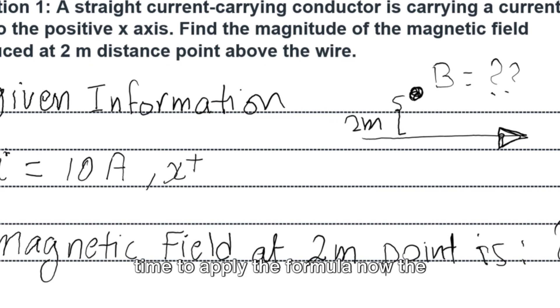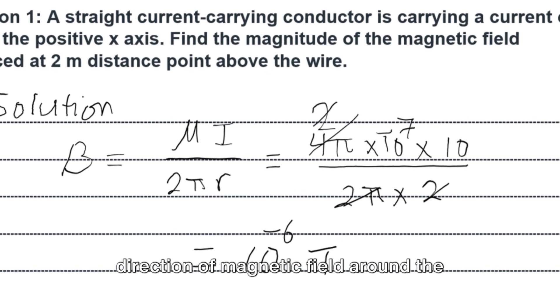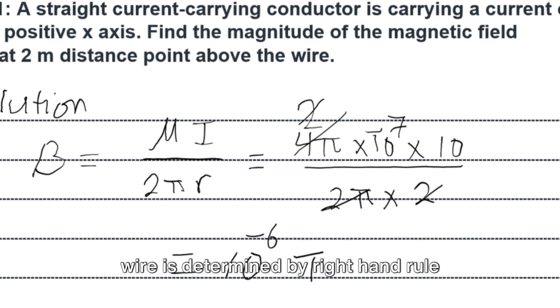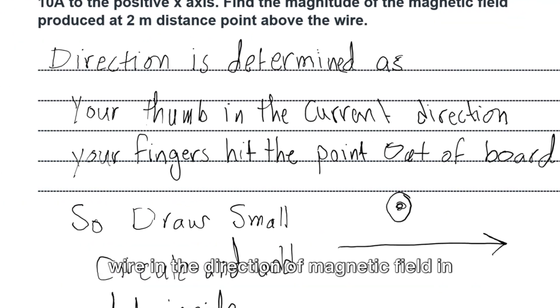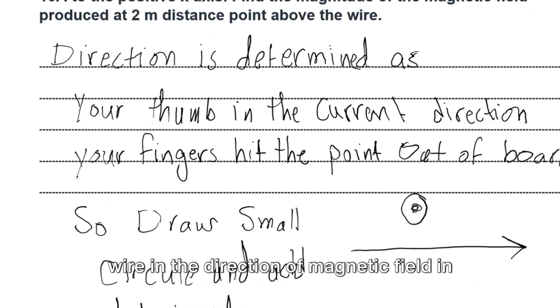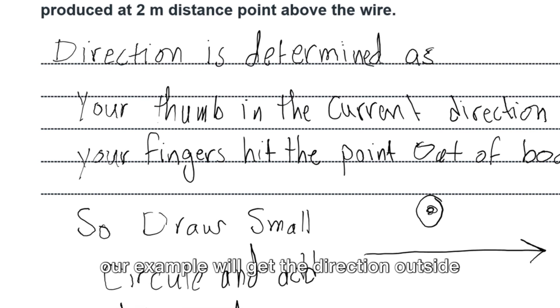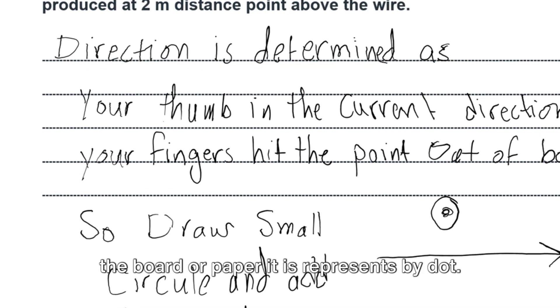Second, it is time to apply the formula now. The direction of magnetic field around the wire is determined by right-hand rule. Remember your thumb in the direction of current and your fingers rotate around the wire in the direction of magnetic field. In our example we'll get the direction outside the board, or paper, it is represented by a dot.